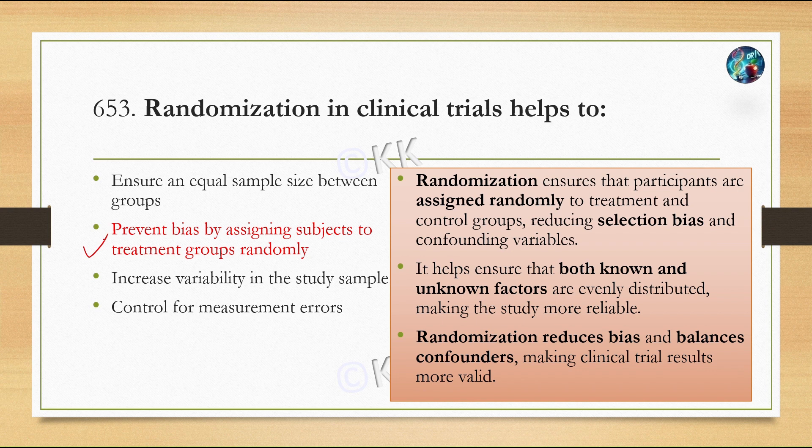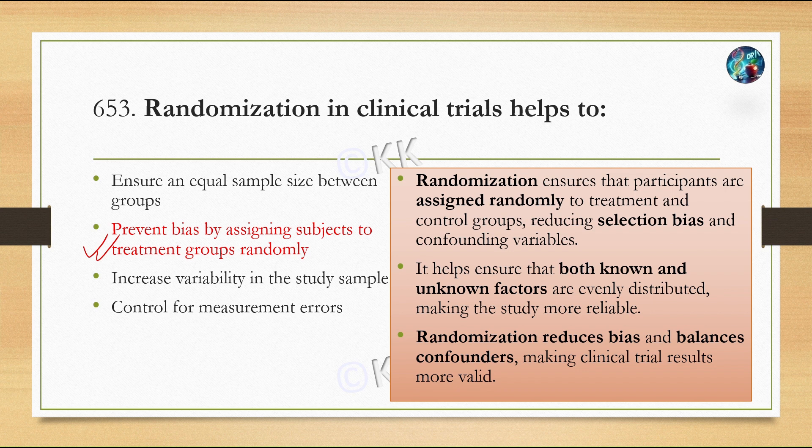Randomization ensures participants are assigned randomly to treatment and control groups, reducing the chances of selection bias and confounding variables. It also helps ensure both known and unknown factors are evenly distributed.